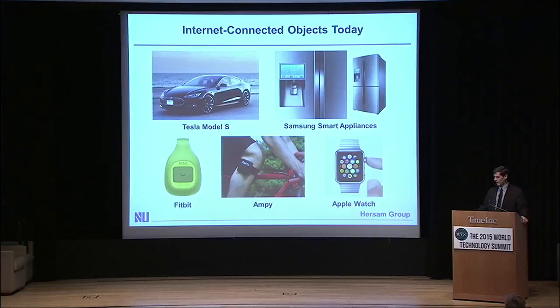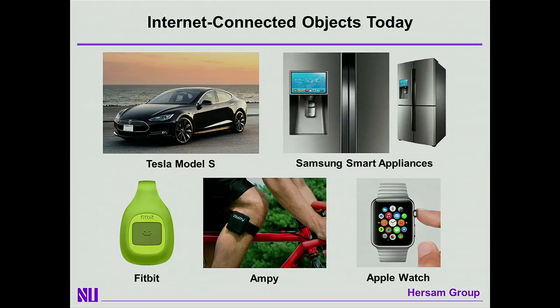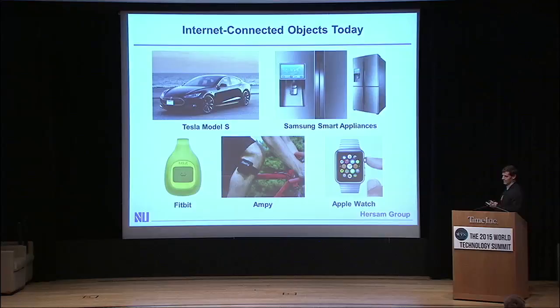Nevertheless, if we look around, we can see that there are internet-connected objects today. For those of you who own a Tesla, you'll know that it is connected to the internet and software updates are downloaded to your car, allowing you to get better utilization of the stored energy in the battery pack. Samsung sells smart refrigerators which will keep track of how quickly you're consuming the food in your fridge. Of course, there's wearable electronics, including Fitbit, and the Apple Watch.